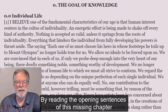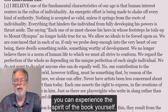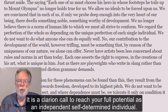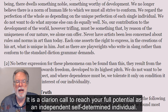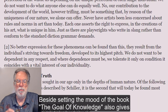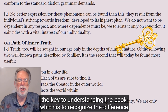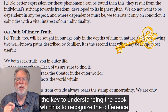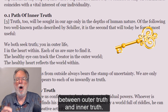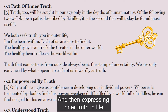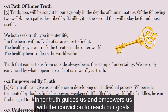By reading the opening sentences of this missing chapter, you can experience the spirit of the book yourself. It is a clarion call to reach your full potential as an independent, self-determined individual. Besides setting the mood of the book, The Goal of Knowledge also gives the key to understanding the book, which is to recognize the difference between outer truth and inner truth. The philosophy of freedom is about striving for inner truth and then expressing inner truth in life. Inner truth guides us and empowers us with the conviction to reach our goals.